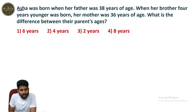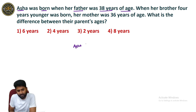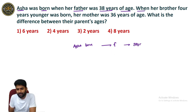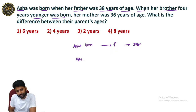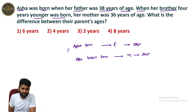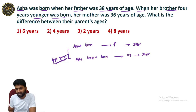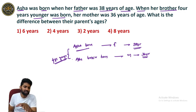Next question. Asha was born when her father was 38 years of age. At the time of Asha's birth, her father's age is 38 years. Asha's brother is 4 years younger. When Asha's brother was born, her mother's age is 36 years. What is the difference of their parents' ages? Asha's brother is 4 years younger, so when Asha's brother was born, Asha's father's age is 38 plus 4 years.